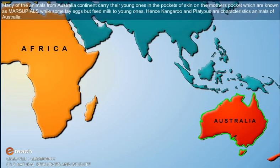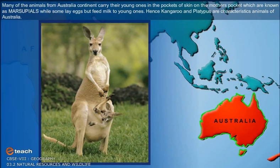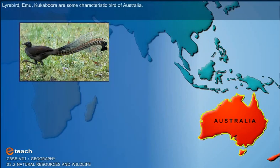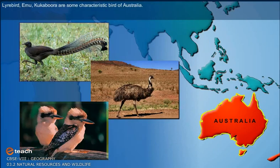Many animals from the Australian continent carry their young ones in pouches of skin on the mother's body, which are known as marsupials. Some lay eggs but feed milk to their young ones. Kangaroo and platypus are characteristic animals of Australia. Emu and kookaburra are some characteristic birds of Australia.